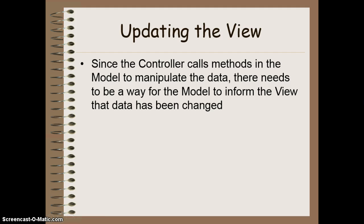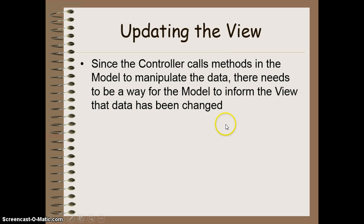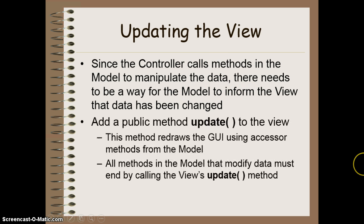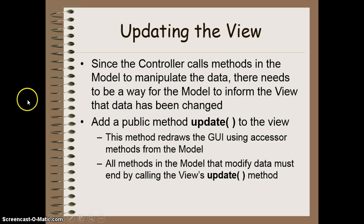Now since the controller calls methods in the model to manipulate the data, there needs to be a way for the model to inform the view that data has been changed. So the controller has gone and said, okay model, change some information — like adding a person to the class or something. Then that model needs to tell the view to show that new person in its list of people. We do this by having an update method in our view. This update method is going to be responsible for redrawing the GUI using all the model's accessor data. That means that every method in my model that is going to change the data somehow should end by calling the update method of the view.